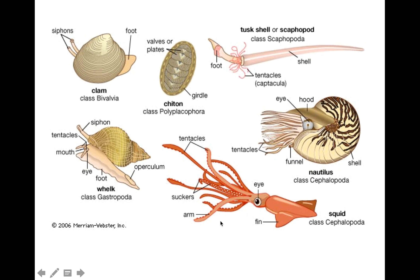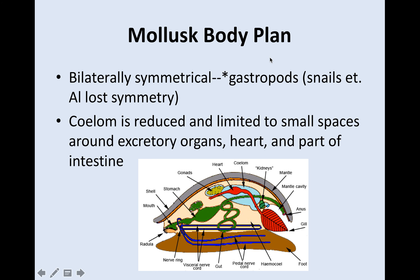Class Gastropoda are usually your snails. Bivalves are clams — anything with two shells. We'll talk about the chitons and squid as well, different types of cephalopods. The basic body plan is that most of them are bilaterally symmetrical, except gastropods. Gastropods are snails, and they lost their symmetry due to torsion. I'll talk a little bit about that when I get to the segment on gastropods.